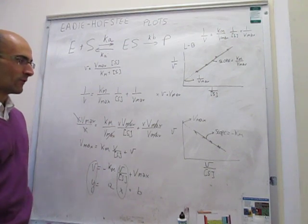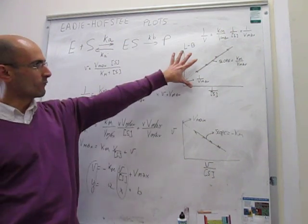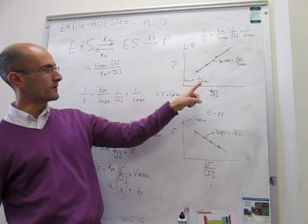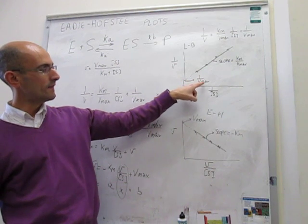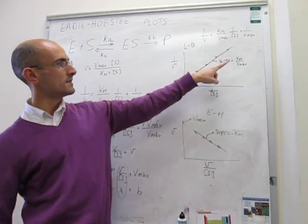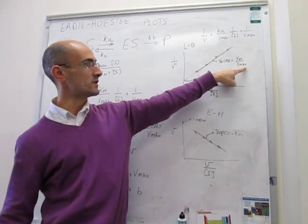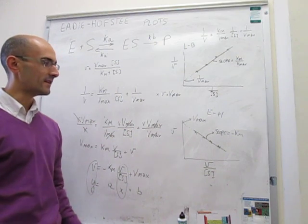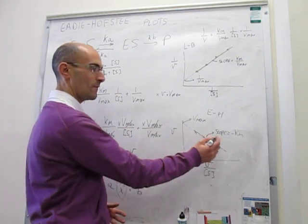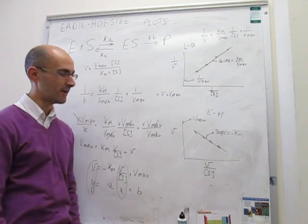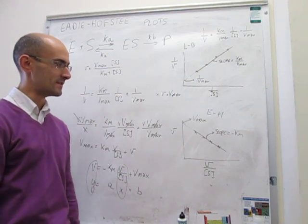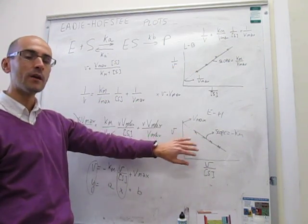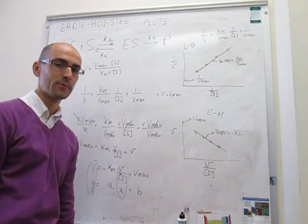Why is the Eadie-Hofstee method advantageous over Lineweaver-Burk? In the Lineweaver-Burk plot, if there is a large error in determining the 1/Vmax intercept, then Vmax has a large error, and since Km requires Vmax to be known first, Km also accumulates large error. In the Eadie-Hofstee plot, Km and Vmax are determined independently — the slope is directly -Km and the intercept is directly Vmax — making it a much simpler and more reliable representation. As we'll see in the next class, there is an additional complication that makes Eadie-Hofstee further superior to Lineweaver-Burk.